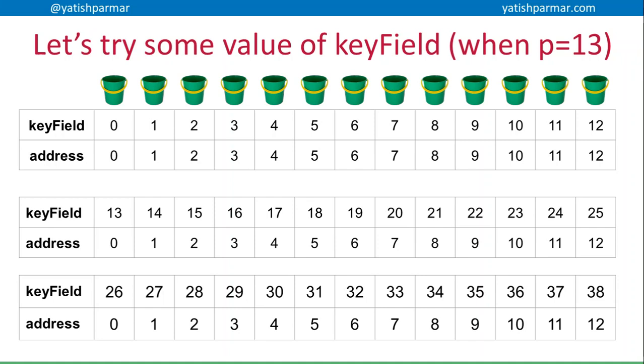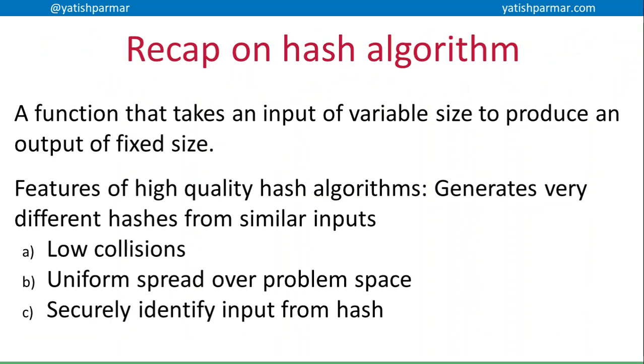These are what we call buckets. So basically when we have particular data and when we try to generate a hash from that, it's going to fall into a particular bucket. Now if you think about what the features of a good hash algorithm were, what we want to avoid are these collisions where data ends up in the same bucket. We actually want to end up with a uniform spread across the problem space because we're not ending up with all these collisions.